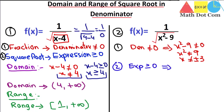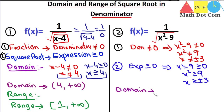From condition two: x² ≥ 9, so taking the square root gives x ≥ ±3. Condition two suggests including ±3, but condition one says x cannot equal +3 or −3, because substituting those values makes the function undefined. So plus and minus three are excluded from the domain.